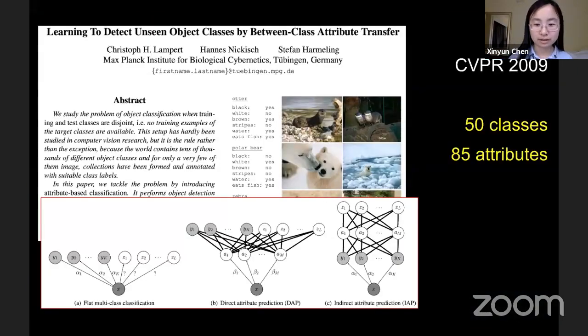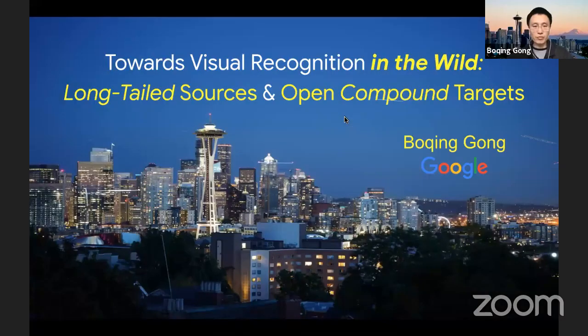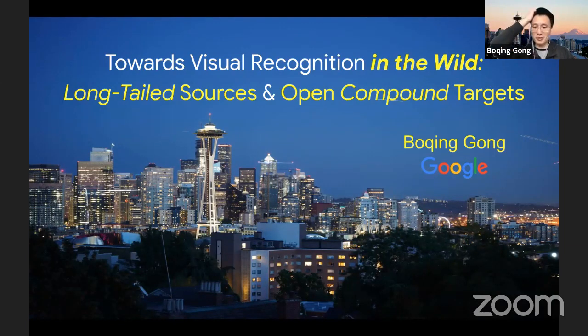So the talk title is Towards Visual Recognition in the Wild, Long-Tailed Sources and Open Compound Targets. So let's welcome Bo Qinggong for his talk. Thank you for the introduction and thanks all the organizers for having me here. I also want to say hi to all the old friends and new friends in this workshop. Great to see you.